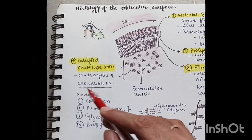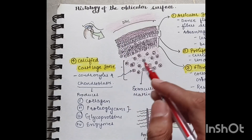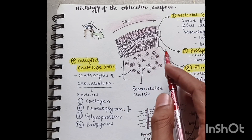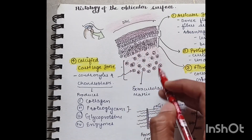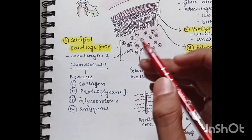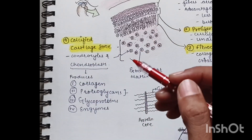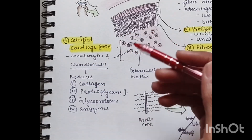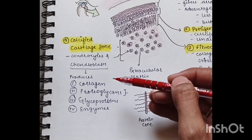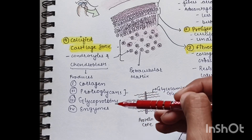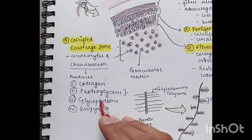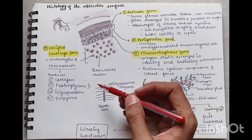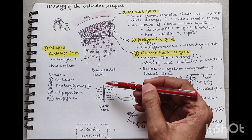The last zone is the calcified cartilaginous zone, made up of chondrocytes, chondroblasts, and intercellular matrix. The intercellular matrix is produced by chondroblasts and includes collagen, proteoglycans, glycoproteins, and enzymes. Proteoglycans are interesting — they are made up of a protein core to which glycosaminoglycans are attached.